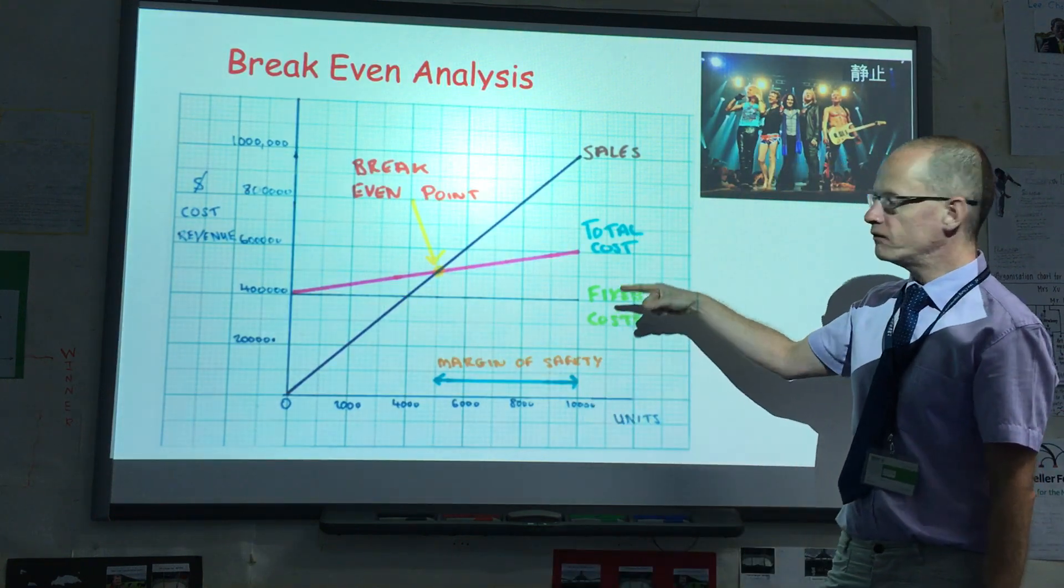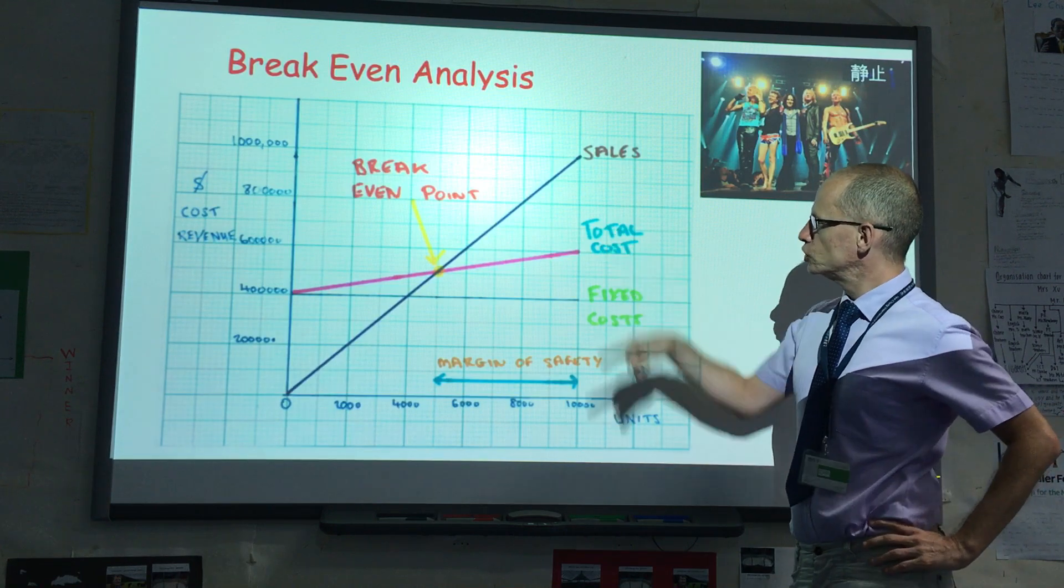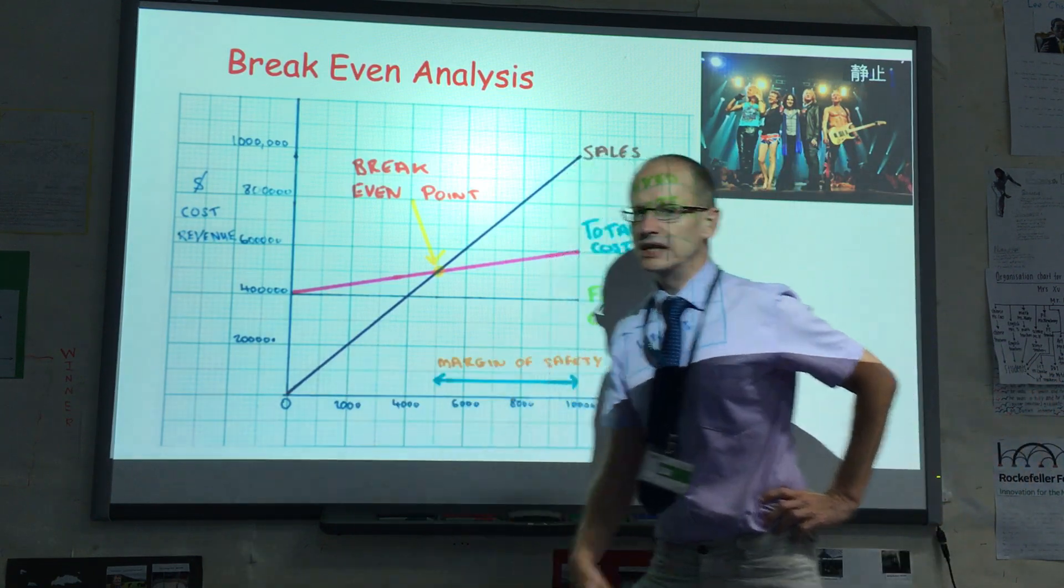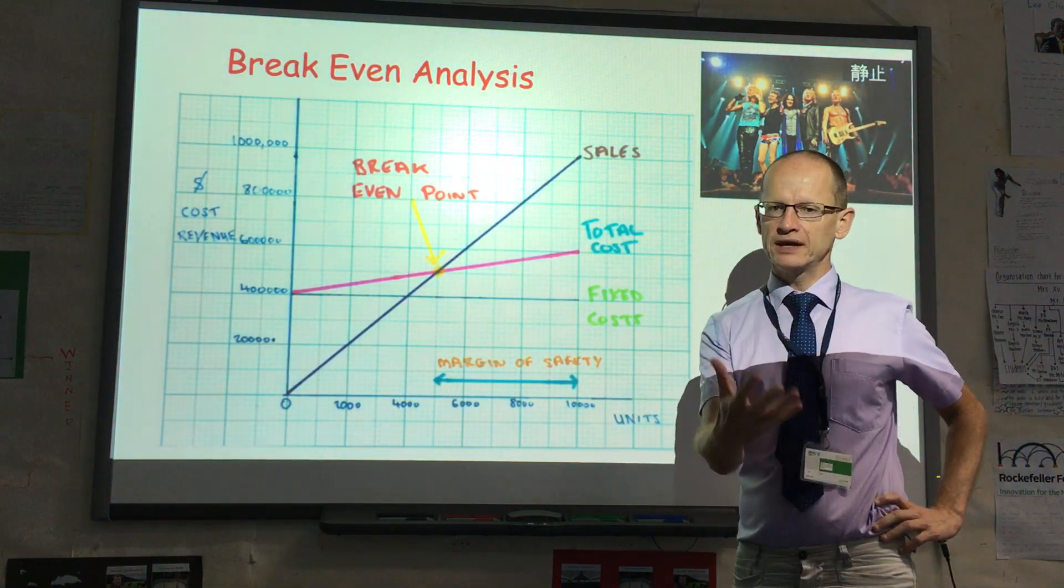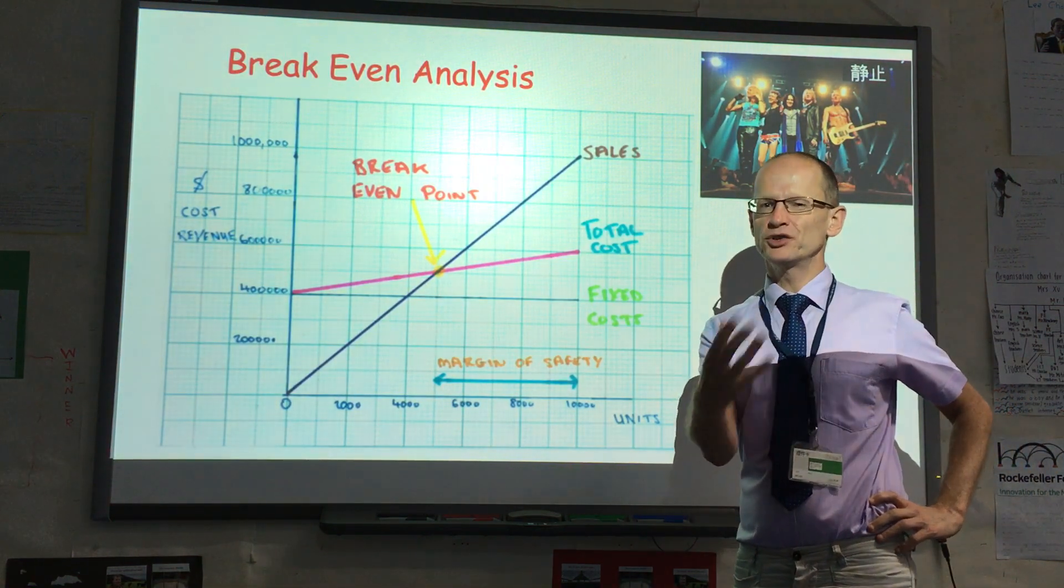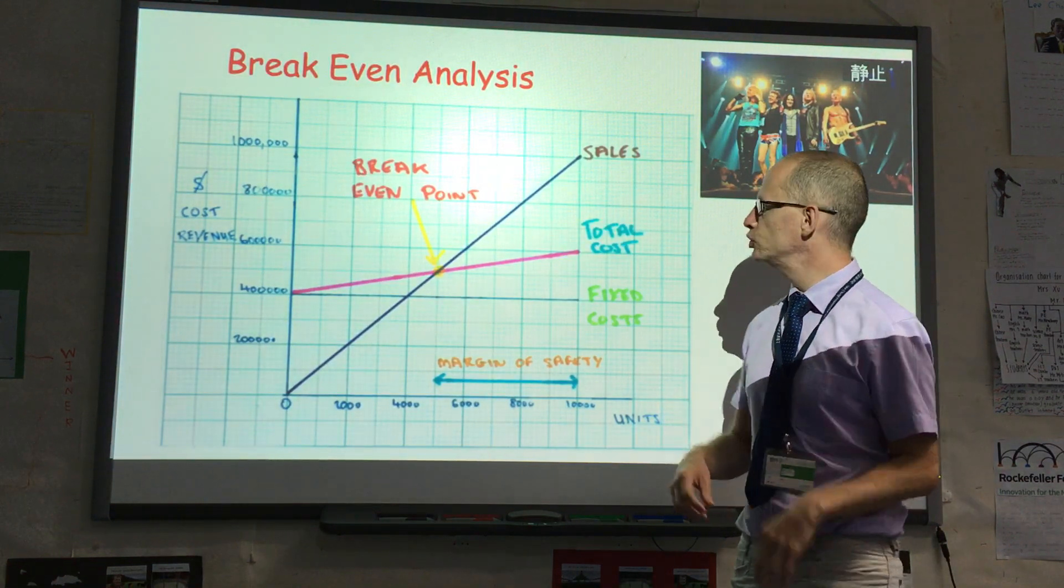Now, obviously we label our diagrams. You can see here I've labeled fixed costs, total costs, and then we have the sales line. If you don't label the diagrams, in a six mark question on the final exam, you may only get four marks or three marks because you didn't label the diagram correctly, and it seems a shame not to.